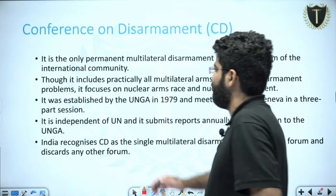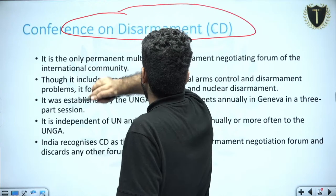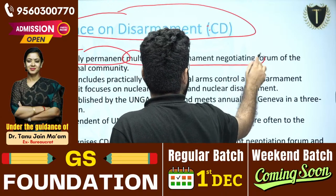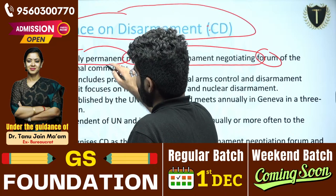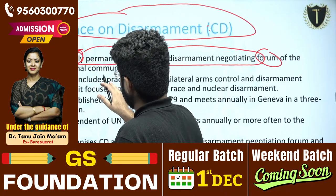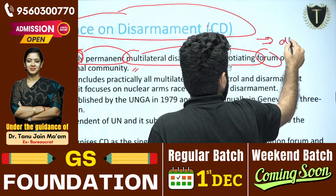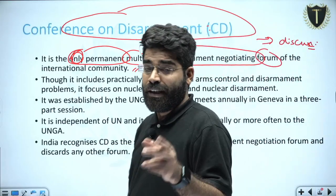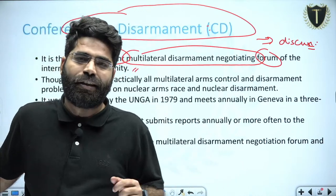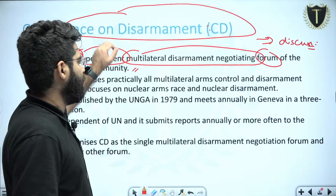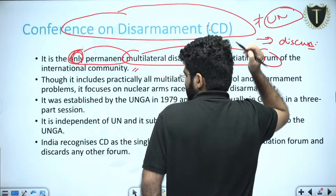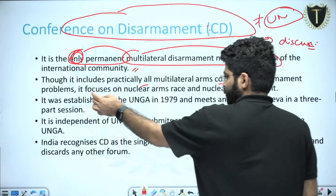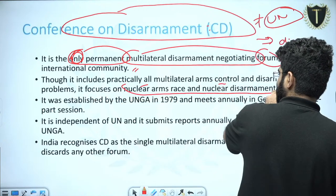Moving on to the Conference on Disarmament — it is the only permanent multilateral disarmament negotiating forum of the international community. It is independent of the United Nations, unlike the earlier body which was under the UN General Assembly. Though it includes practically all multilateral arms control and disarmament problems, it focuses on nuclear arms race and nuclear disarmament.